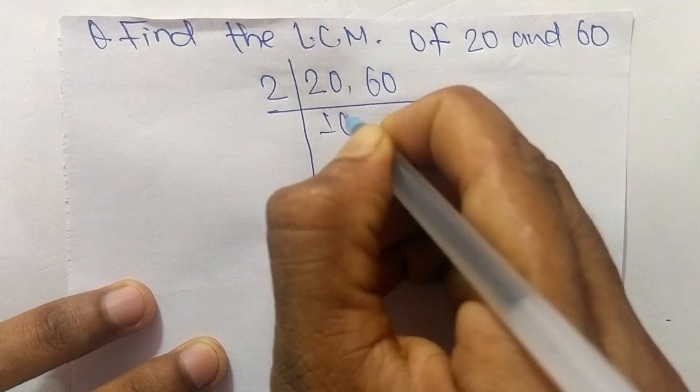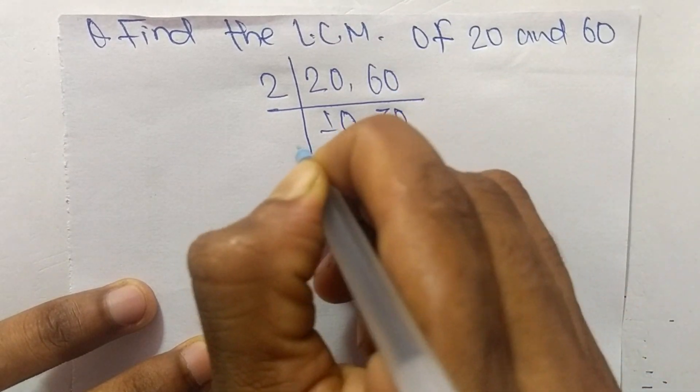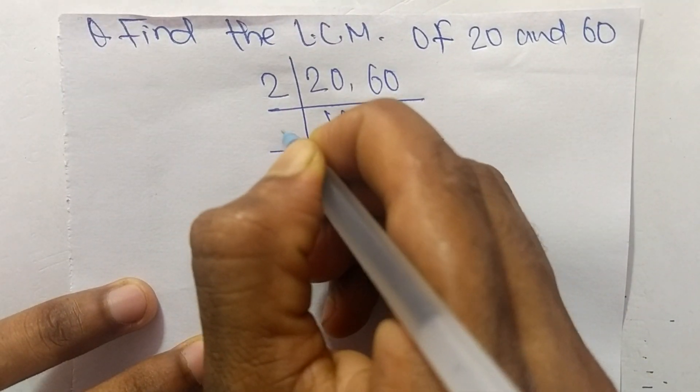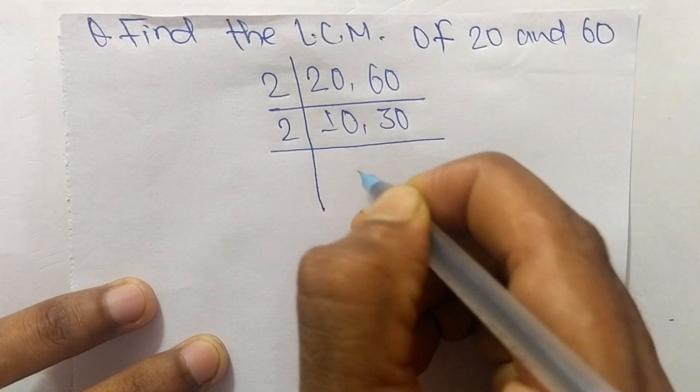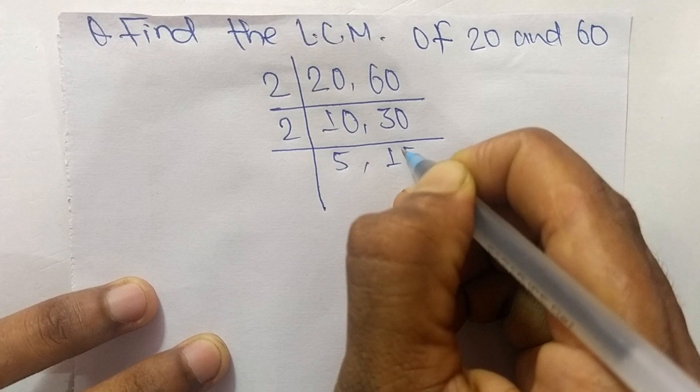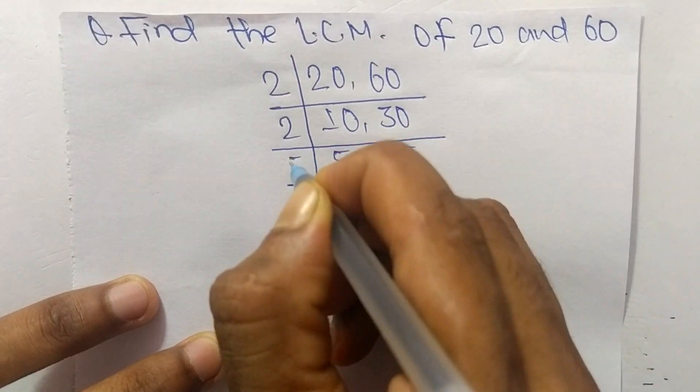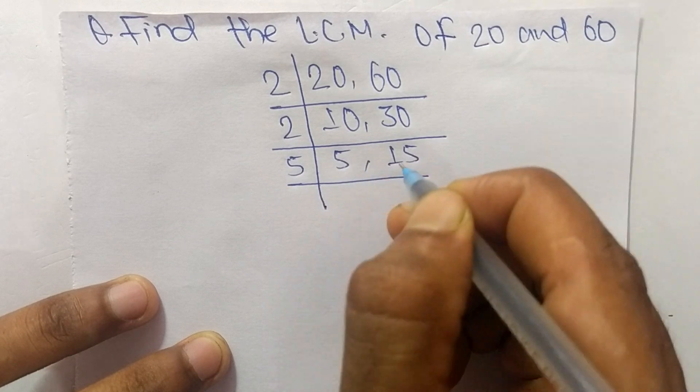2 times 10 equals 20, and 2 times 30 equals 60. Again we take 2. So 2 times 5 equals 10, and 2 times 15 equals 30. Now we take 5 because 2 can't exactly divide both numbers.